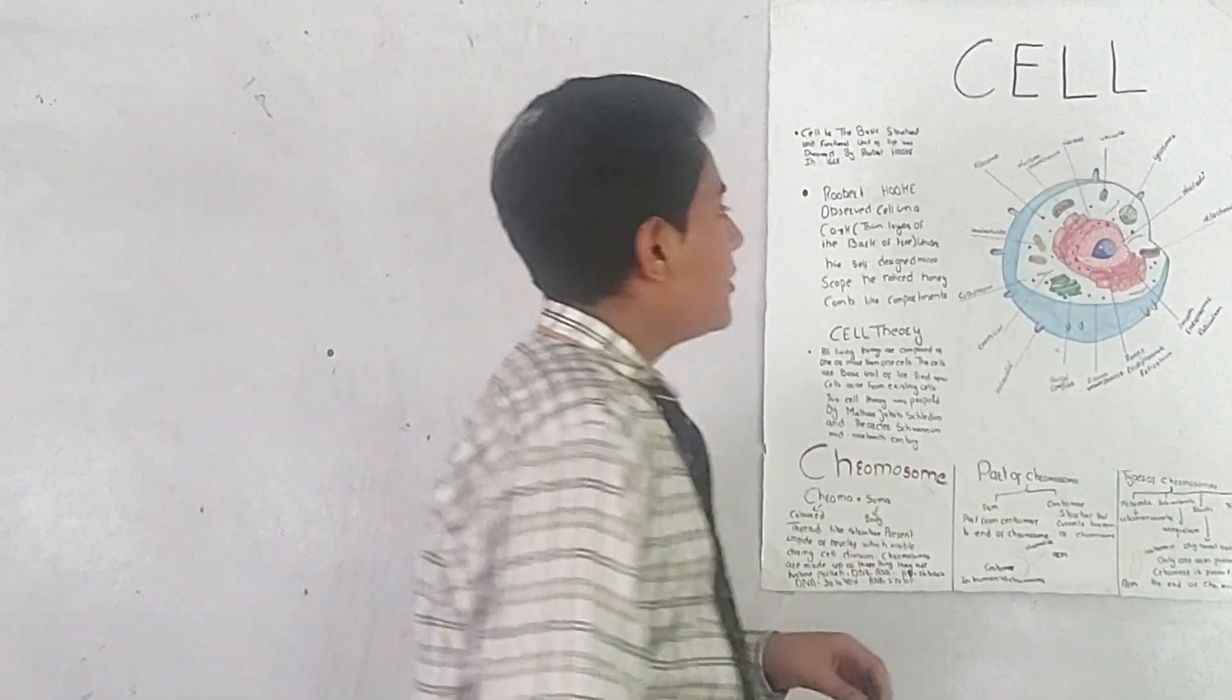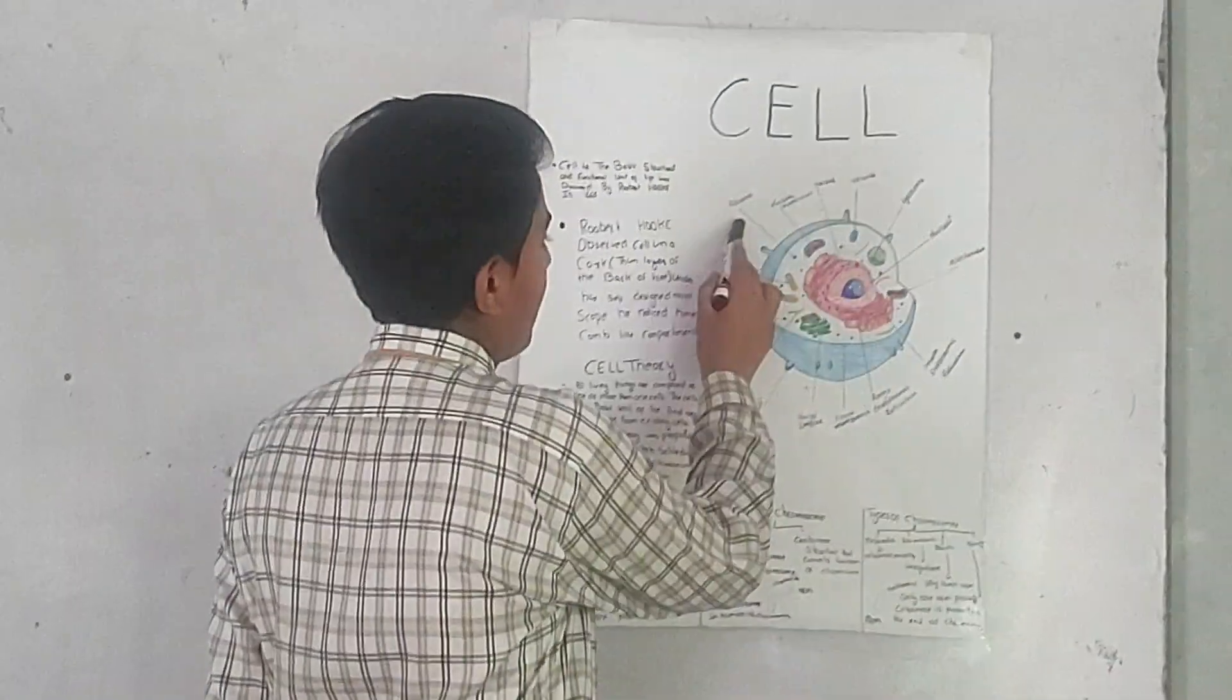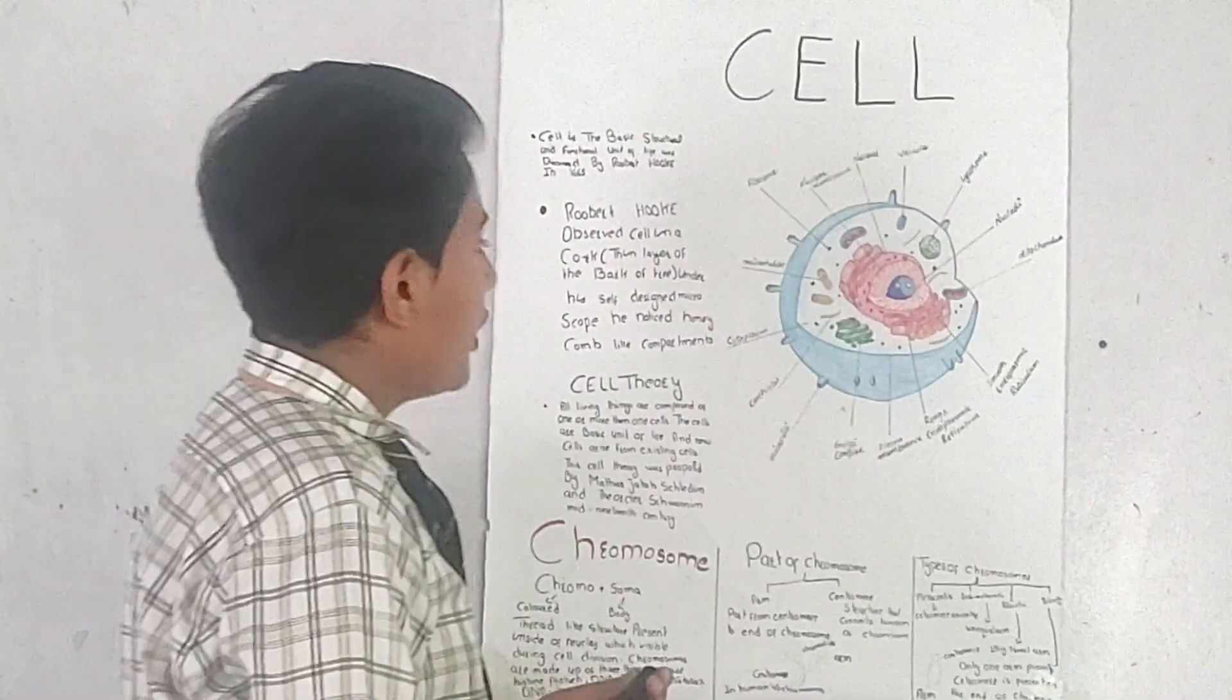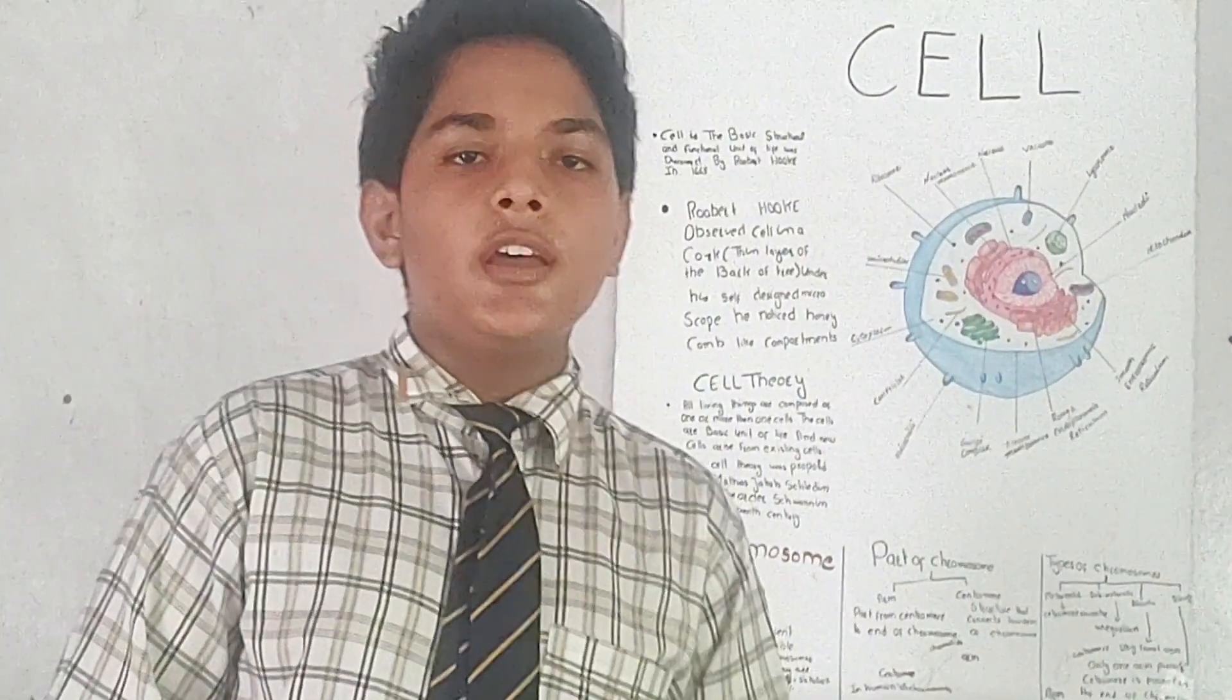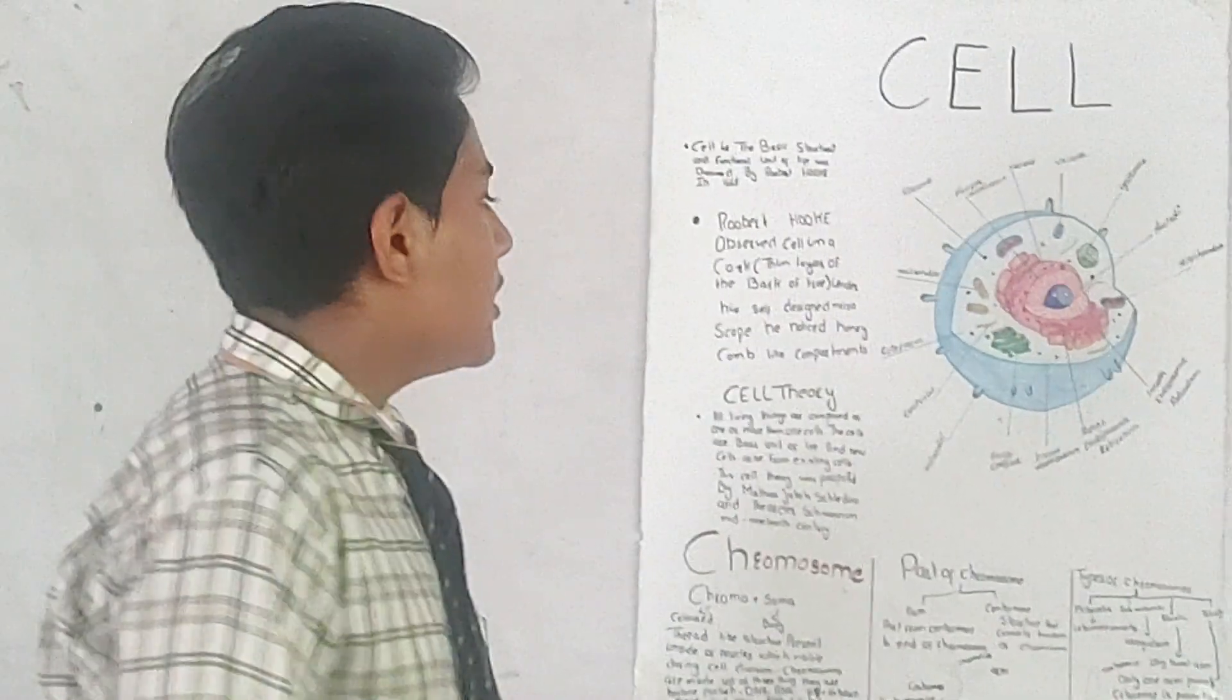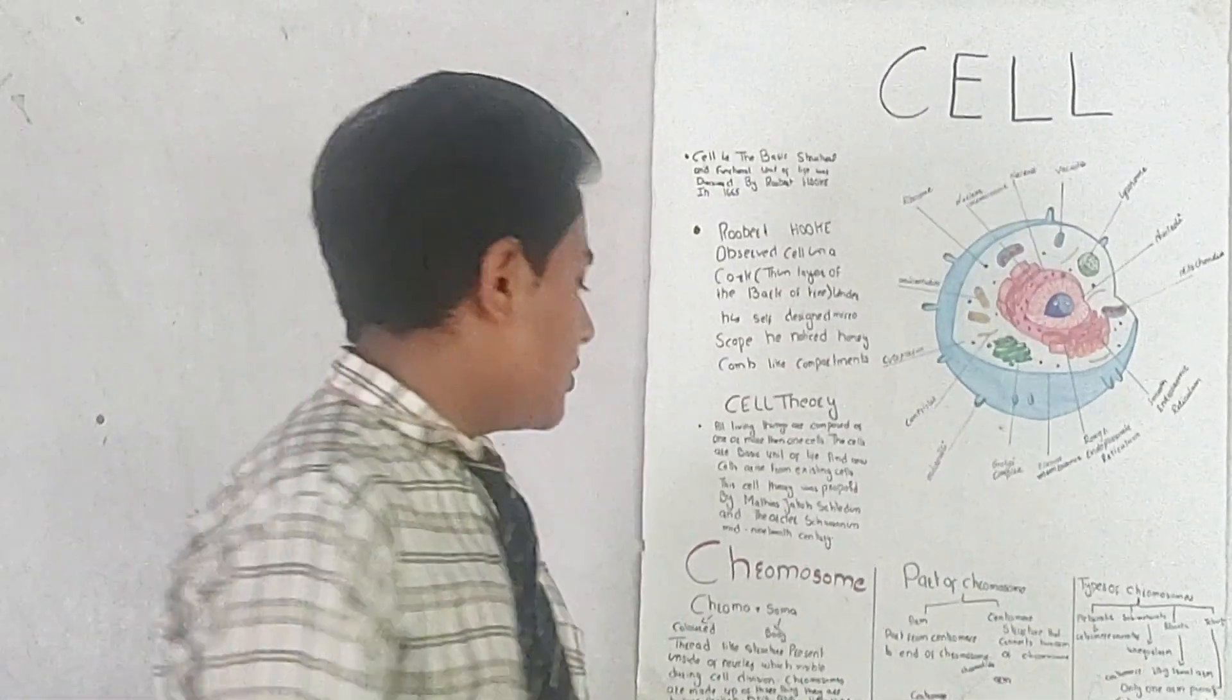Cell structure: This is cell structure and these are ribosomes. These are protein factories. They produce protein. And their cell membrane passes water and substances through all unwanted substances. Nucleus controls all activities and it contains chromosomes.